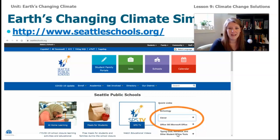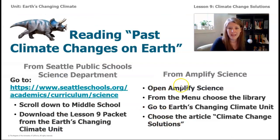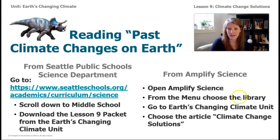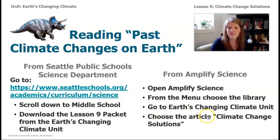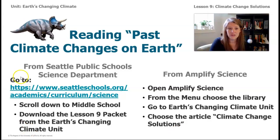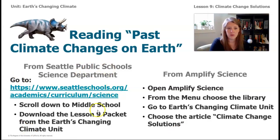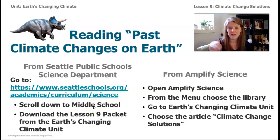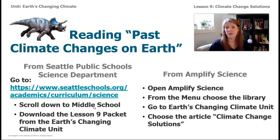There's a really cool article we're going to read about climate change solutions. To access it, log on to your Clever account if you're a sixth grade student in Seattle schools, then open Amplify Science from the menu, choose the library, go to Earth's Changing Climate unit, and choose the article Climate Change Solutions. If you can't access Clever or Amplify, go to the Seattle Schools science department website at seattleschools.org/academics/curriculum/science, scroll down to middle school, and download the lesson nine packet, which contains the article we're reading.